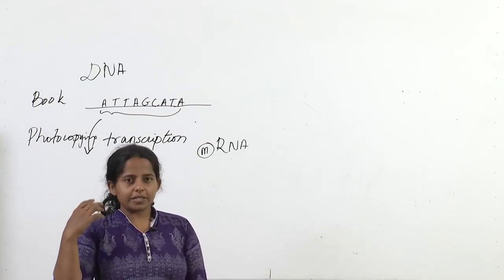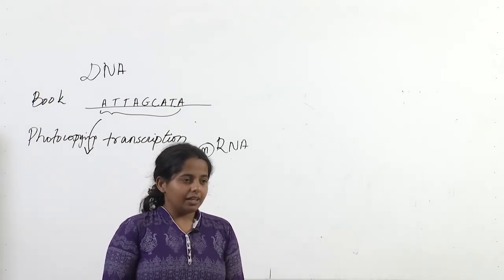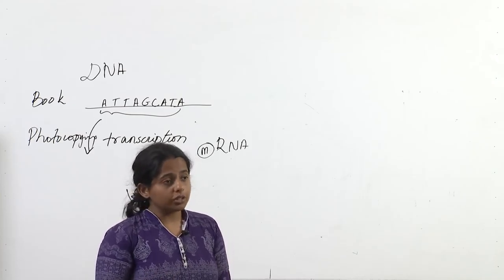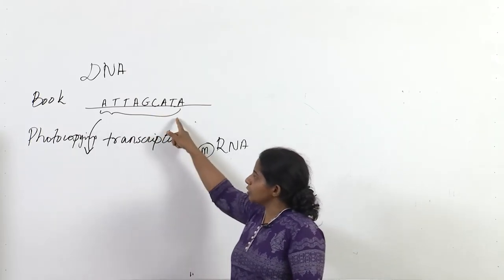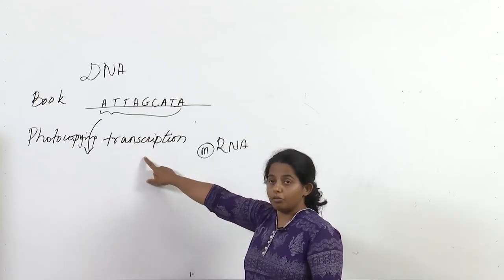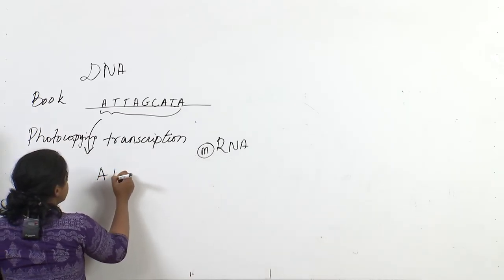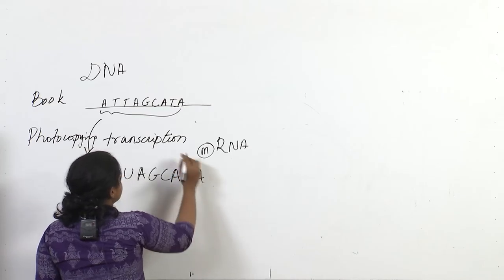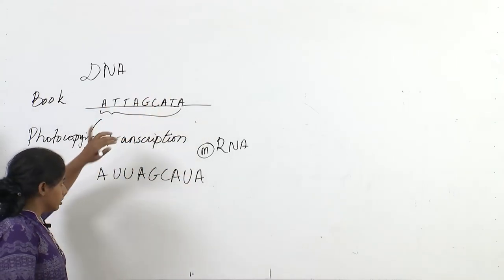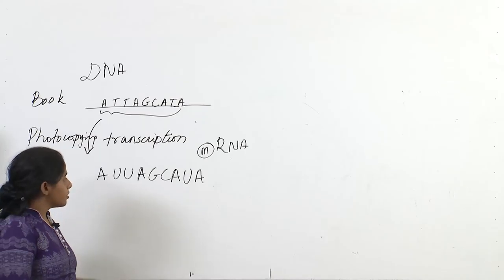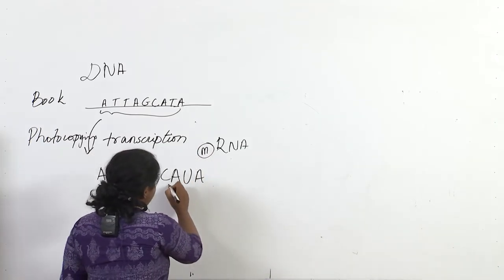In transcription, the DNA is converted into messenger RNA. Imagine you need to make a septic tank — you don't have the information, so you go to a library, find the right book with the information about how to make a septic tank, and then go to the photocopier and ask for a photocopy of the pages you require. This is transcription — DNA is converted into messenger RNA. The messenger RNA for this DNA sequence would have U instead of T. This messenger RNA is shorter than the entire DNA genetic material and can be taken wherever it needs to go — to the site where the action will happen.